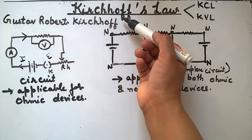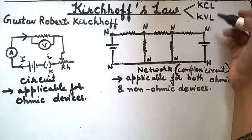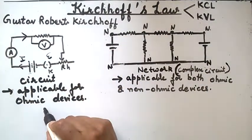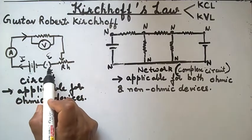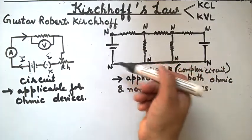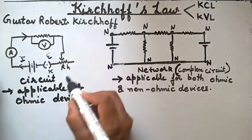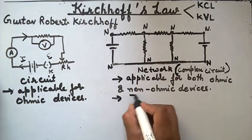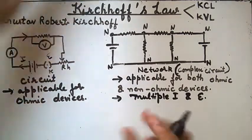We are studying chapter three, Current Electricity — Kirchhoff's Laws. Kirchhoff's law was given by scientist Gustav Robert Kirchhoff, who gave two laws: KCL and KVL. Ohm's law is applicable for ohmic devices only and not for non-ohmic devices. A circuit with only one current and one EMF is a simple circuit, but when multiple currents, EMFs, inductors, or capacitors are connected, that complex circuit is known as a network.